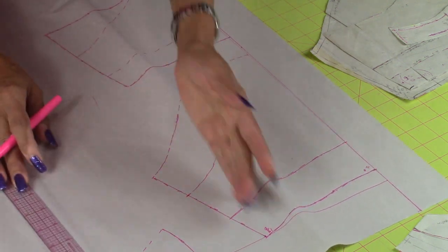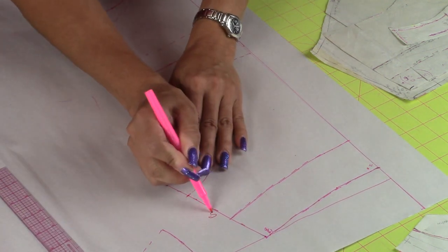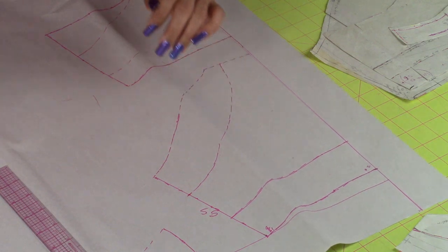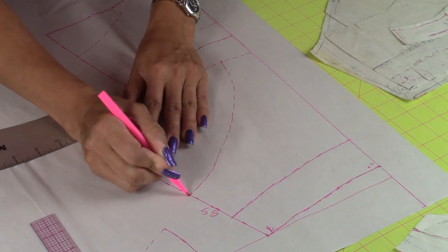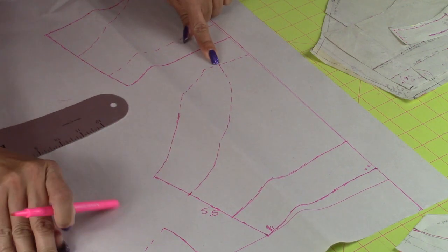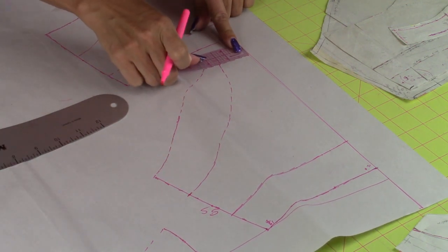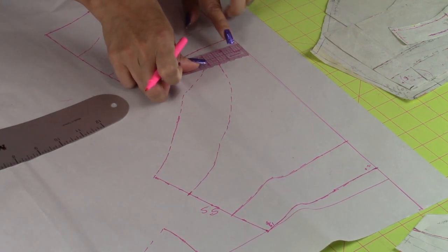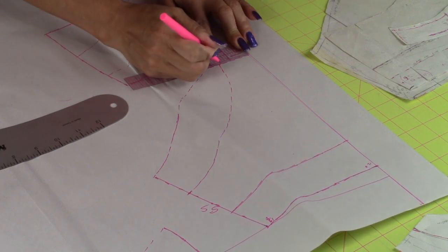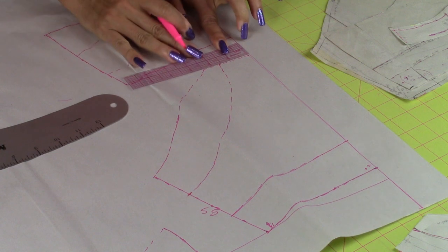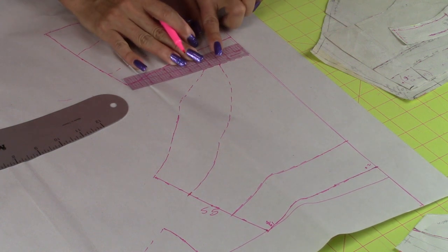So this is the side seam. Then you mark it right there. Then right here, I make it at 1 and a half inches. Maybe a little bit more. Like 1 and a half inches usually.